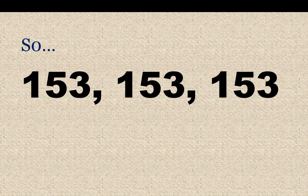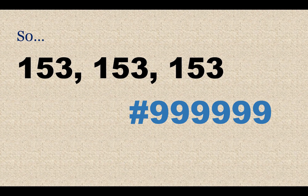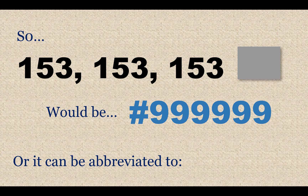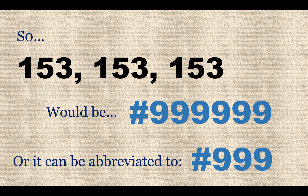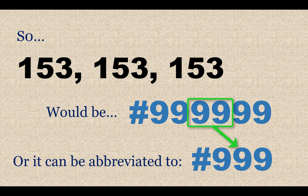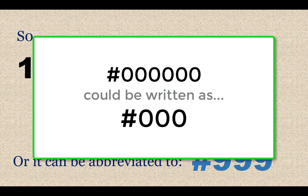So 153, 153, 153 as a full color — not just one channel — would be #99, 99, 99 in hex, which is a gray color. We can actually abbreviate this. Whenever the two digits in each pair are the same, you can shorten it. So instead of #999999, you can write #999. Just like 00, 00, 00 can be shortened to #000. We'll see that when we use it in CSS.